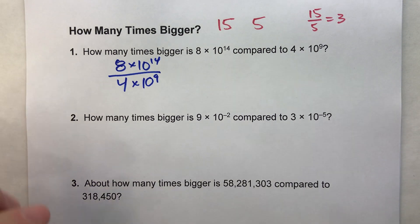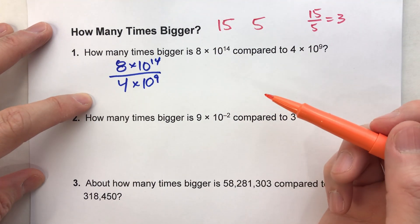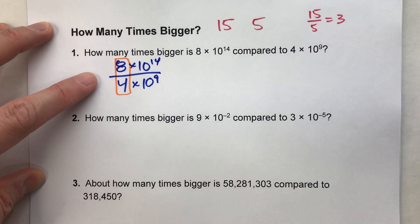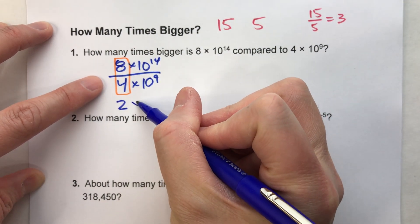And it looks a little complicated, but dividing these doesn't have to be. Start by dividing the regular numbers. 8 divided by 4 is 2 times.